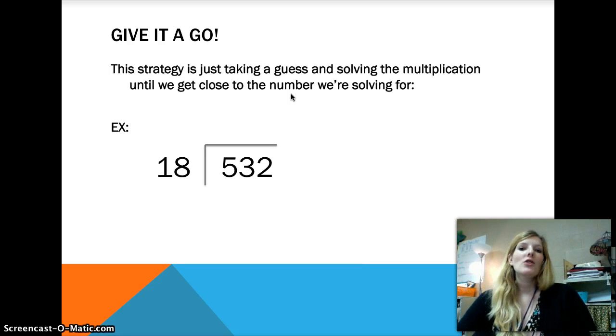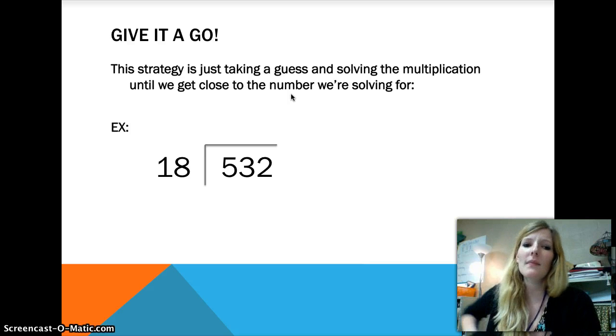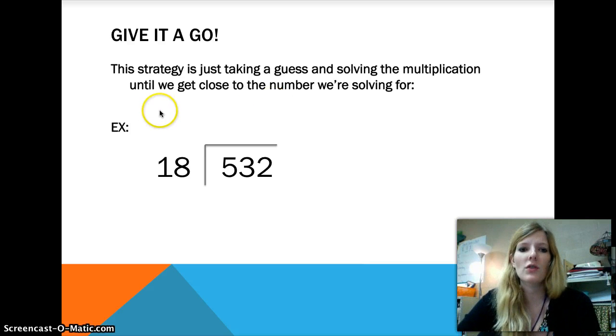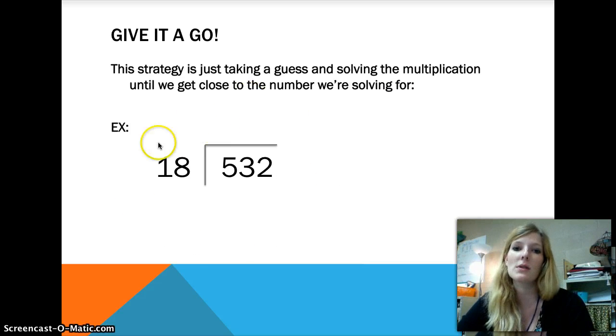Give It a Go. This is a new strategy that I want you to use when we're doing our two-digit divisors today. Trust me, it'll make it so much easier. So go ahead and write down the name, Give It a Go, and you can write down the definition. The strategy is taking a guess and solving the multiplication until we get close to the number that we're solving for. Sounds kind of wordy, but let me show you what I mean. We're not going to work this whole problem out. I'm just going to show you an example of how I use this strategy.